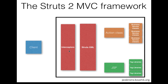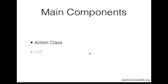We can configure and override the default interceptor setting, and we're going to look at what interceptors are and how to override the defaults later on. But for now, we're just going to ignore this — it is going to be there by default. So having eliminated all these components, we are left with three main components: the action class, JSP, and the struts.xml. These are the three components that we're going to write in our simple Struts2 application, and we're going to see how they interact and talk to each other.